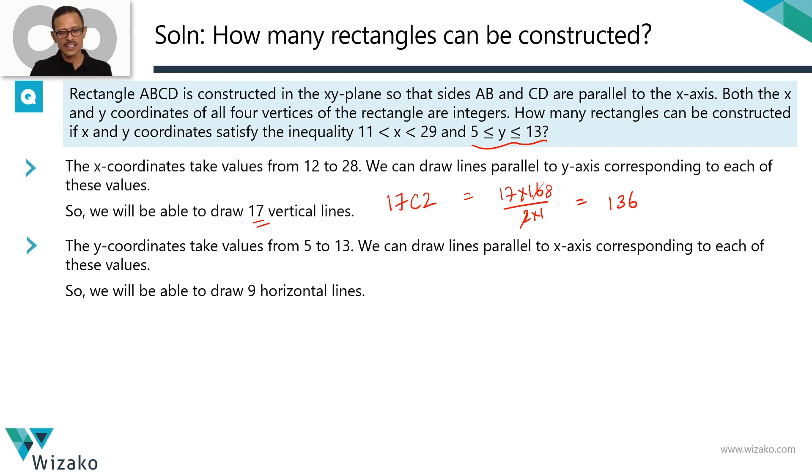So of these nine horizontal lines, we need to pick two of them. That can be done in 9 C2 ways. The value of 9 choose 2 is equal to 9 times 8 upon 1 times 2. Cancels out as a 4. The number of ways of picking two horizontal lines out of 9 is 36.